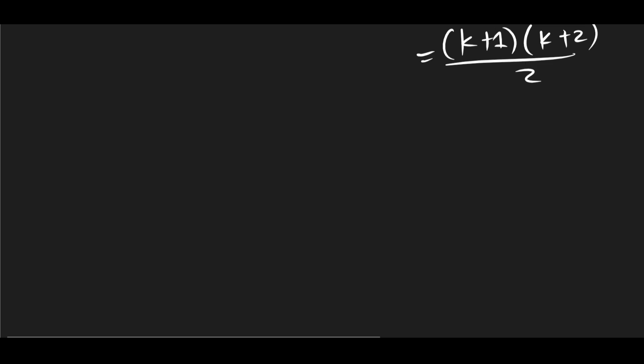Okay, so let's rewrite Pk. 1 plus 2 plus 3 plus k equals k times k plus 1 all over 2. So what do we need to add to the left-hand side in order to get Pk plus 1?